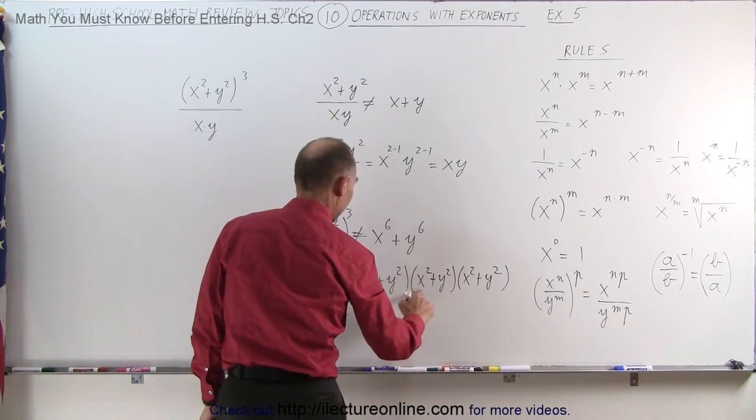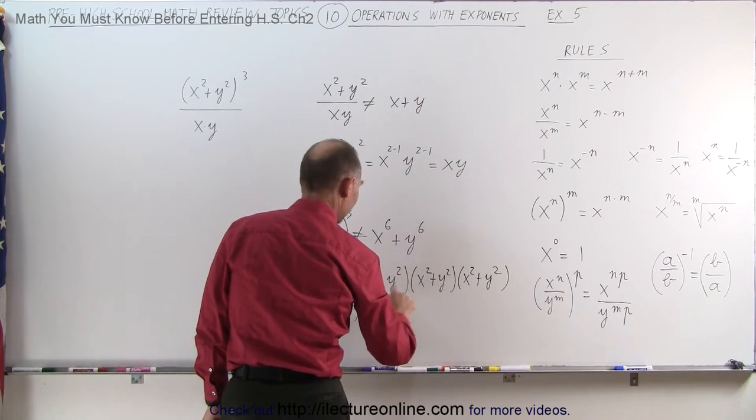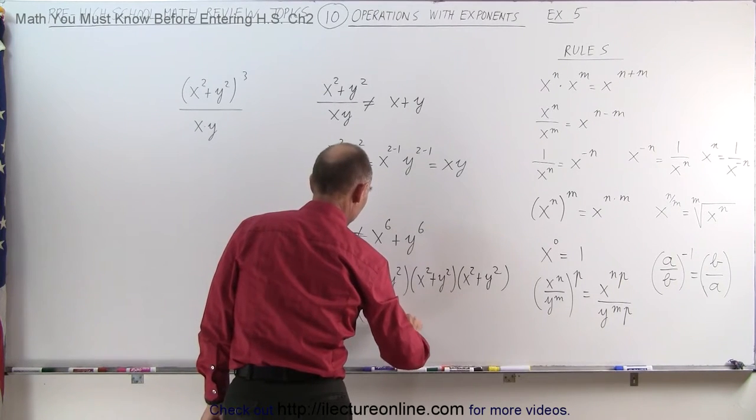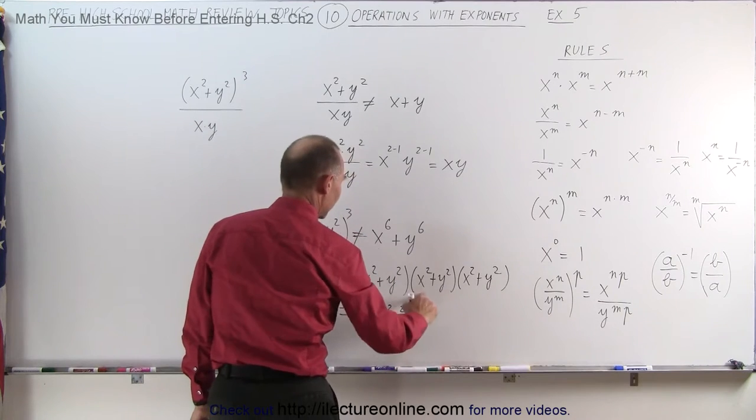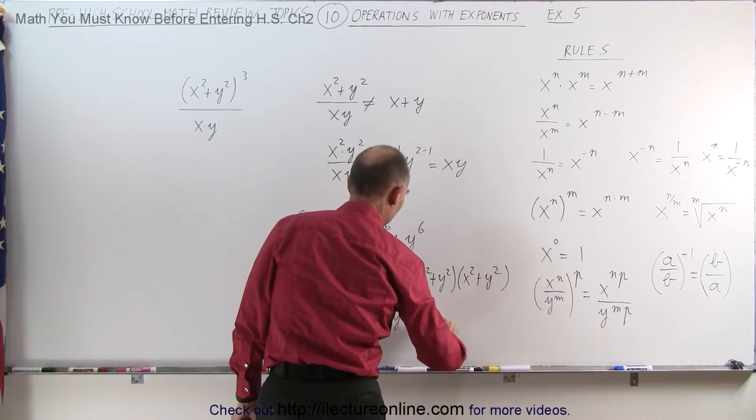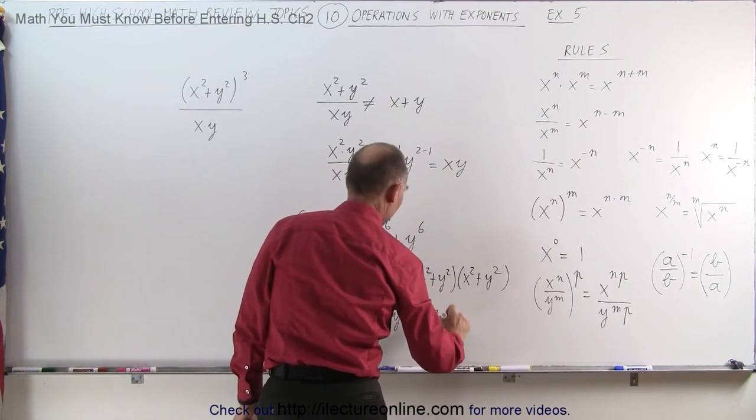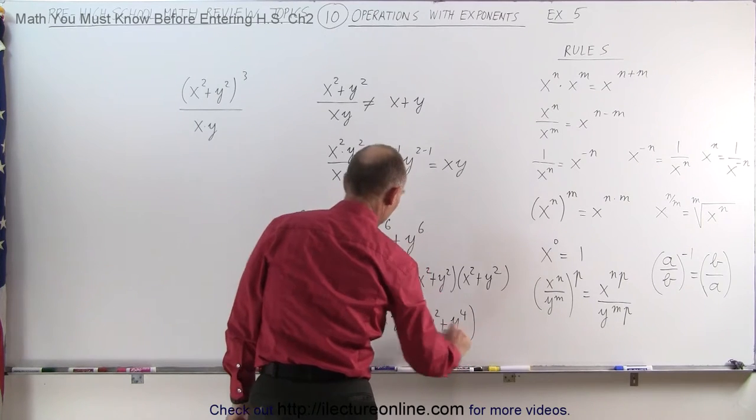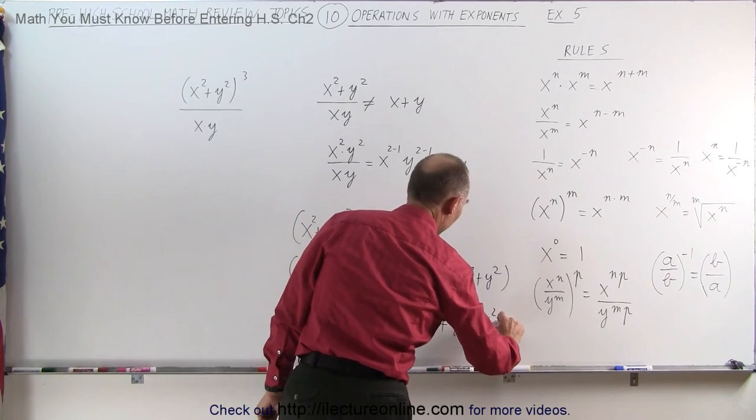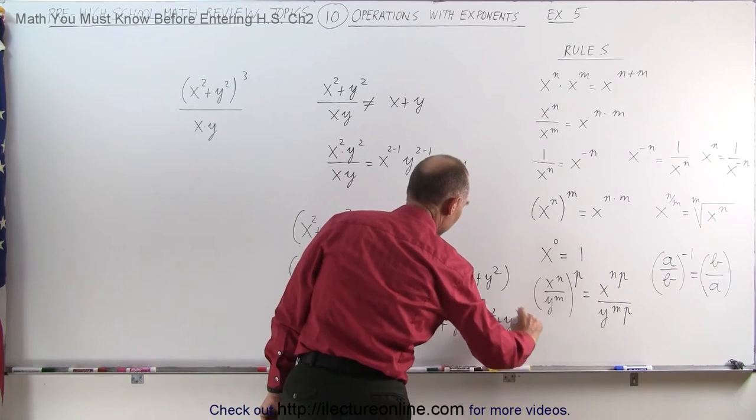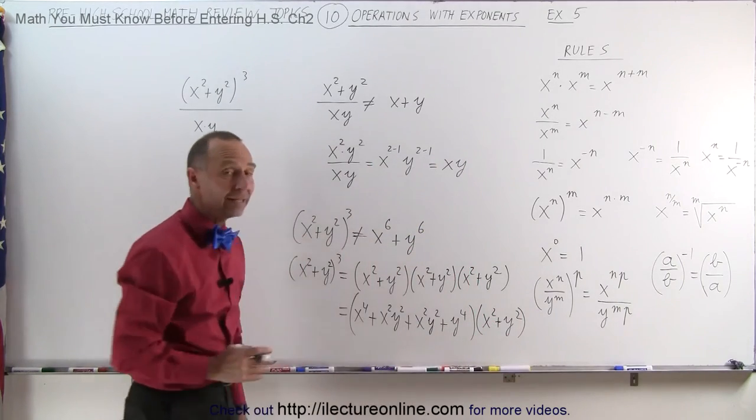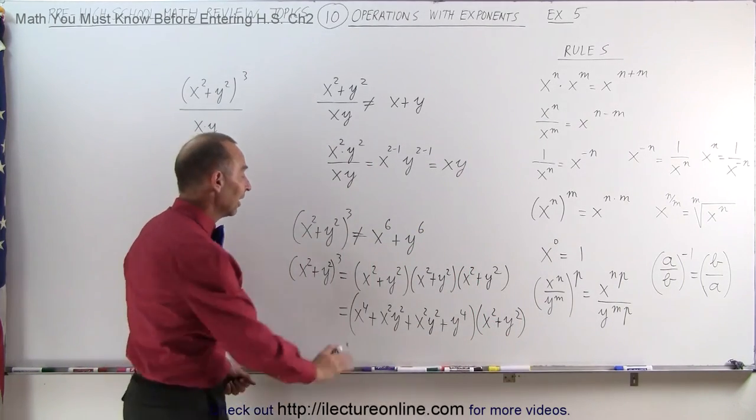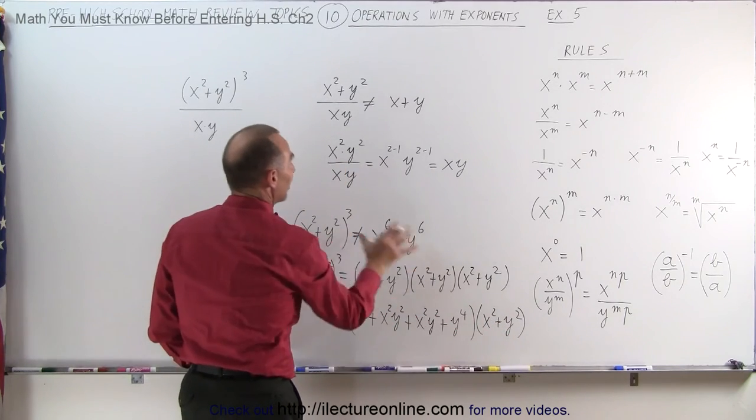This would become x squared times x squared, which is x to the fourth, plus this times this, which gives you x squared times y squared, plus this times this gives you x squared times y squared, plus this times this gives you y to the fourth power. And the whole thing multiplied times x squared plus y squared. And then you have to multiply all those again, and you can clearly see that this is in no way equal to this.